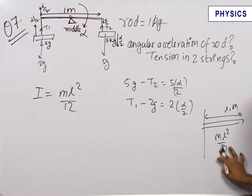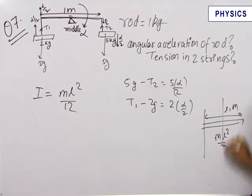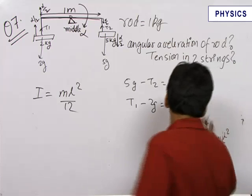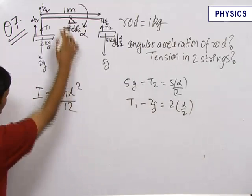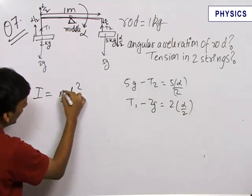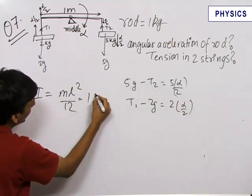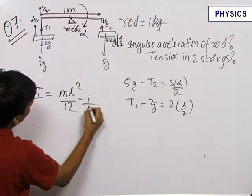If the same rod is hinged about its center, the moment of inertia becomes mL square by 12. So in this case we know the moment of inertia to be mL square by 12. The mass is 1 kg, the length is 1, therefore this is equal to 1 upon 12.